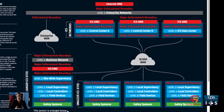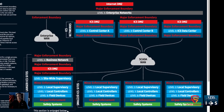Level three communicates with level four via a major enforcement boundary. Between them we have an ICS DMZ — some call it level 3.5, though it depends on the organization. That major enforcement zone sits between level three, your site-wide or plant-wide control network, and the business network. Most places I've visited use the term ICS DMZ and understand what that means.